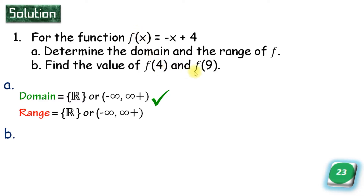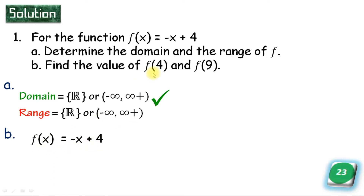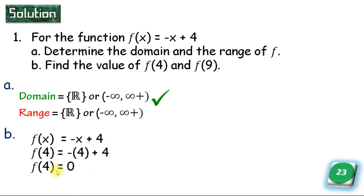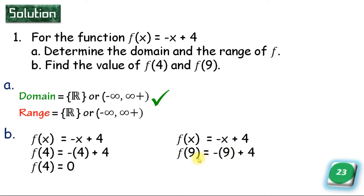We will show you the form of f of 4. F of x equals negative x plus 4, so f of 4 equals negative 4 plus 4, which equals 0. Then f of 9: f of x equals negative x plus 4, so f of 9 equals negative 9 plus 4, which equals negative 5. The value of f of 4 is 0 and f of 9 is negative 5.